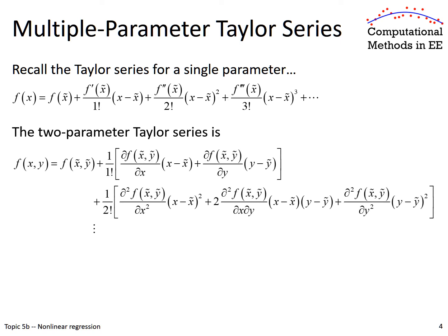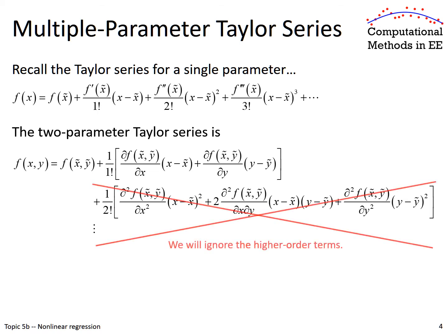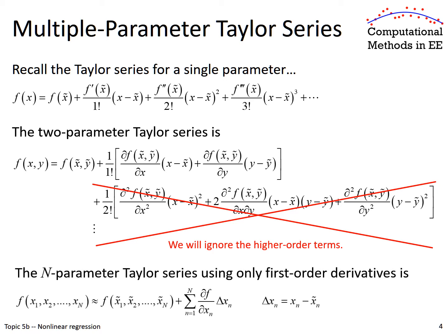We can generalize this to two parameters. It has the same basic form where we have our function, our first order terms, second order terms, and it gets quite complex. But for our purposes, we are going to drop all of the higher order terms and only retain those first order terms. We can generalize to an n-parameter Taylor series to estimate a function of multiple variables, plus these approximation terms. The difference terms are lumped into delta-x, which is simply the difference between one of our unknowns and the value that we're doing our Taylor series about. We'll use this to convert our nonlinear functions into linear functions.